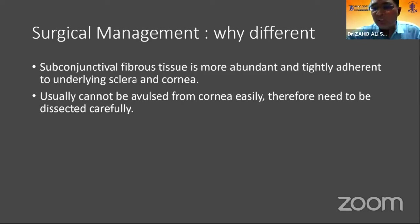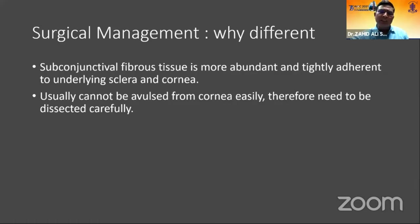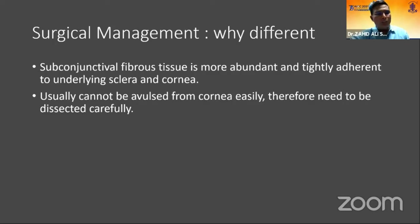Recurrent pterygium surgery is more challenging because subconjunctival fibrous tissue is abundant and tightly adherent to the underlying sclera and cornea. In primary surgery the pterygium head can be avulsed like capsulorhexis ('pterygium rexis'), but this is not possible in recurrent cases — fine dissection is required. Histopathologically, primary pterygium invasion does not go beyond Bowman's layer, but recurrent pterygium invades deeper stroma, often requiring shaving of the superficial stroma.